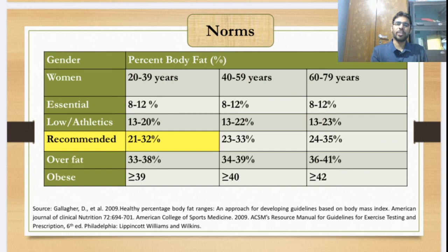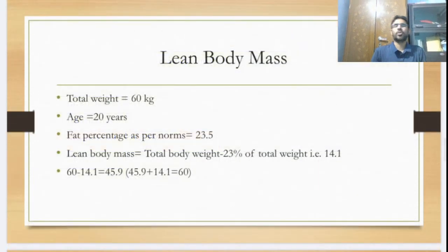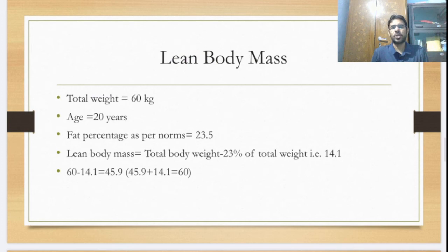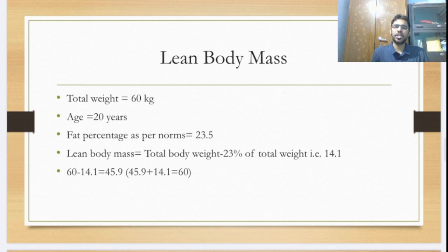After calculating the body fat percentage of the individual, if you want to calculate the lean body mass, you use the body weight and fat percentage you already have. With a fat percentage of 23.5% on a body weight of 60kg, 23.5% of 60 equals 14.1kg of fat. So 60 minus 14.1 equals 45.9kg — meaning the lean body mass in your body is 45.9kg.